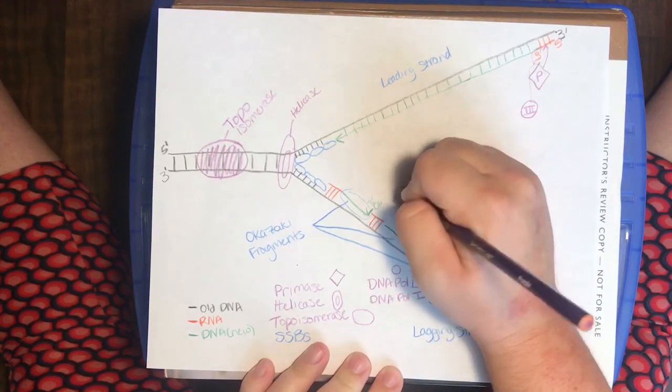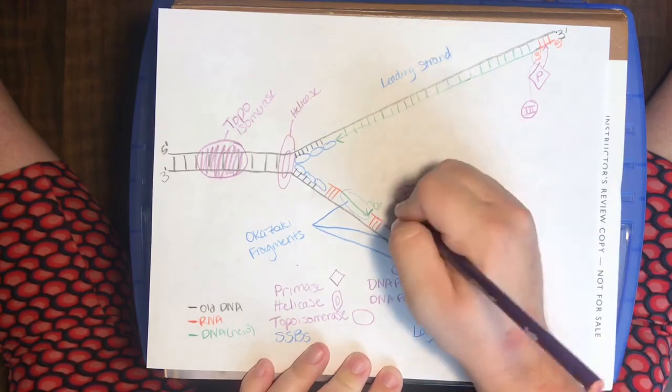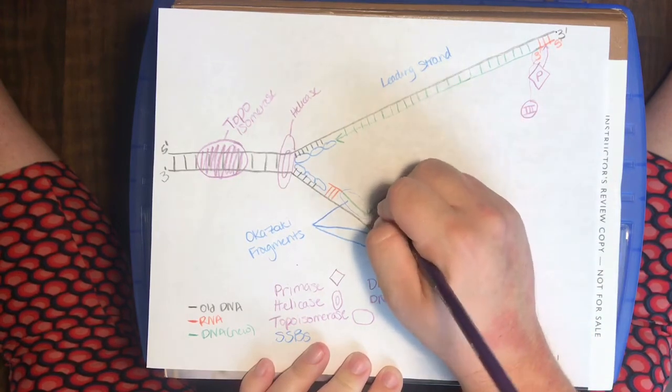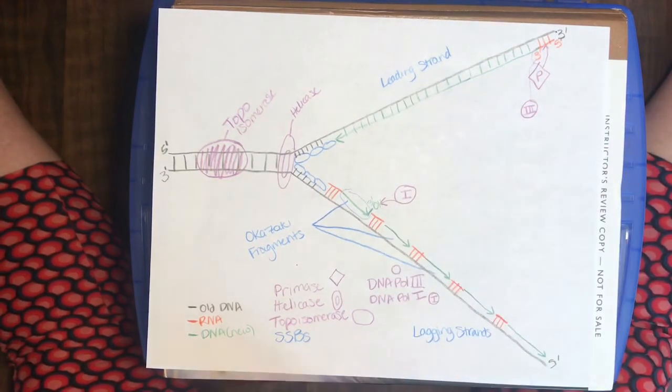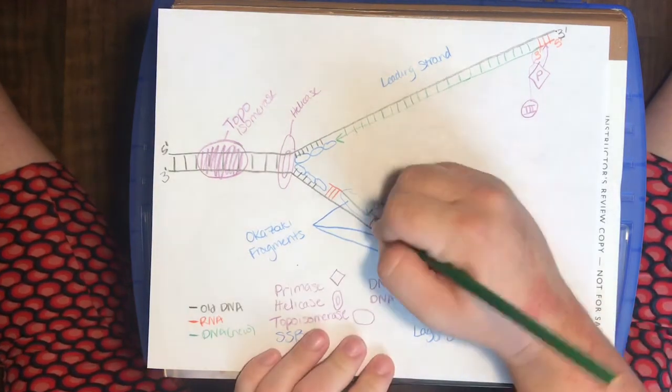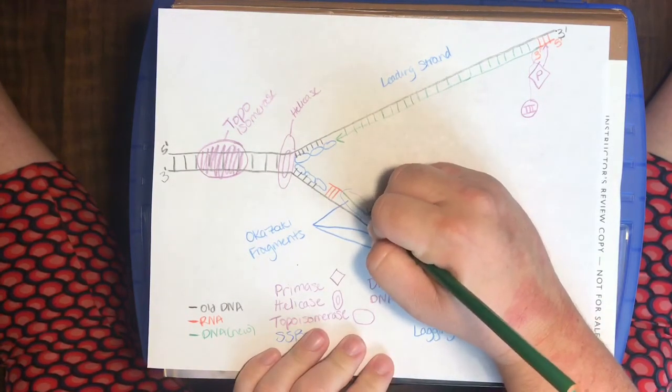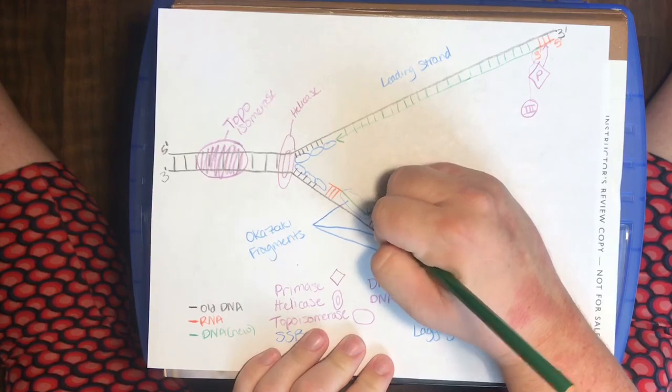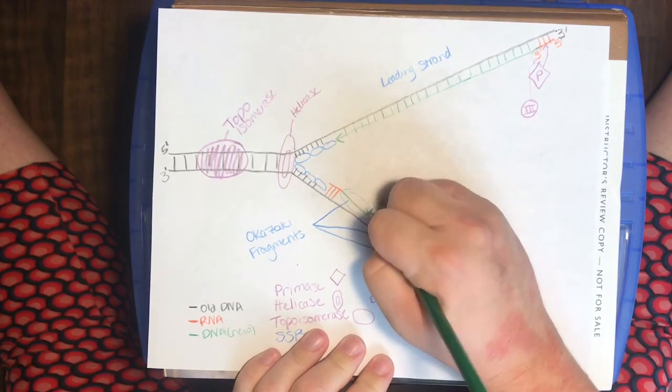So, let's have that come in right here. It is going to come, find this hydroxyl group, and it's going to start laying down new DNA in place of that RNA. It's going to extend right from here and replace this RNA primer.